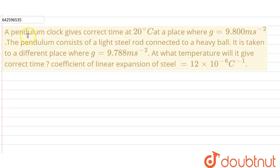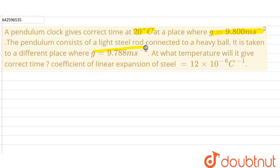Hello everyone. Our question is: a pendulum clock gives correct time at 20 degrees Celsius at a place where acceleration due to gravity g is 9.8 meters per second square. The pendulum consists of a light steel rod connected to a heavy wall. It is taken to a different place where acceleration due to gravity is 9.788 meters per second square. At what temperature will it give the correct time? The coefficient of linear expansion of steel is 12 × 10⁻⁶ per degree Celsius.